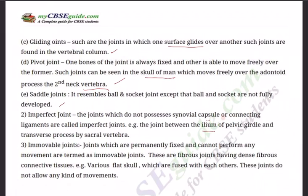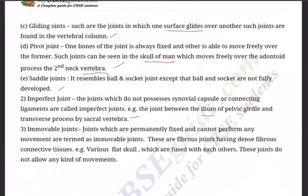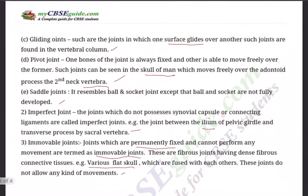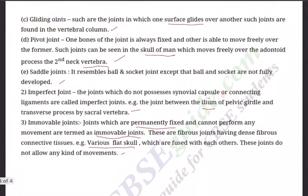Imperfect joints do not possess synovial capsule or connecting ligaments. Example: the joint between the ileum of the pelvic girdle and transverse process of the sacral vertebra. Third type: immobile joints — joints which are permanently fixed and cannot perform any movements, termed immobile joints. These are fibrous joints with dense fibrous connective tissue. Example: the fused flat bones of the skull, which do not allow any movement. This is how you present long-answer type questions — keep practicing, and we will meet in the next session.